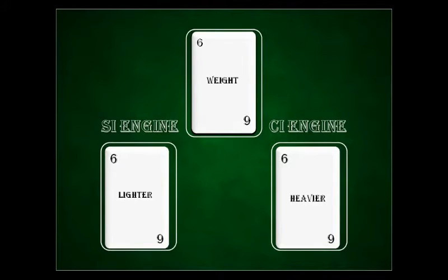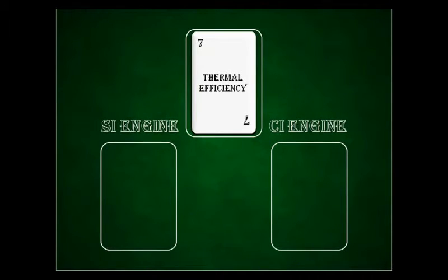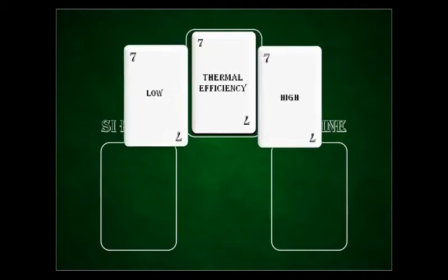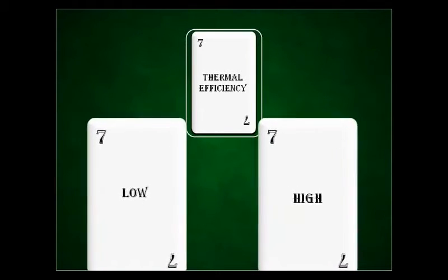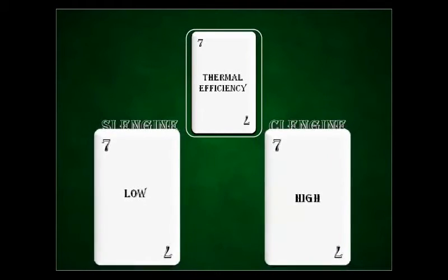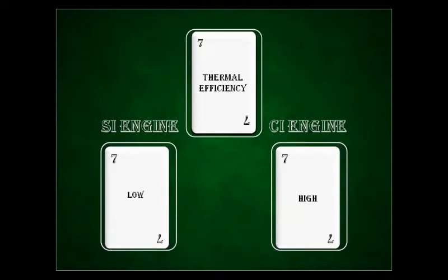Next is thermal efficiency. In CI engines, the higher compression ratio gives them the potential to achieve higher thermal efficiency. In SI engines, the lower compression ratio reduces the potential to achieve higher thermal efficiency.